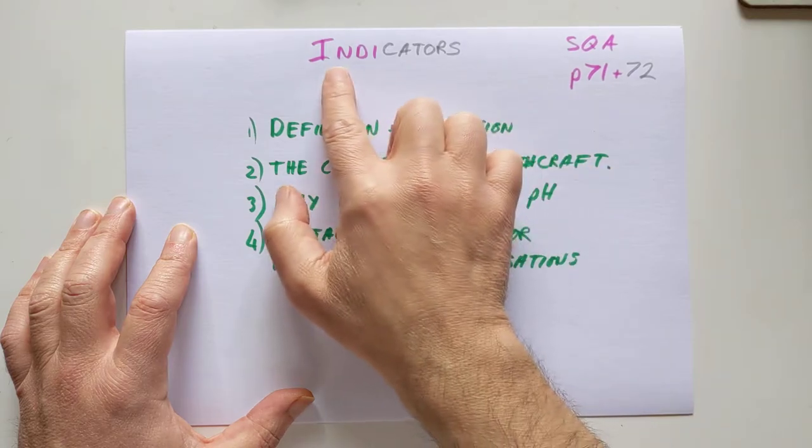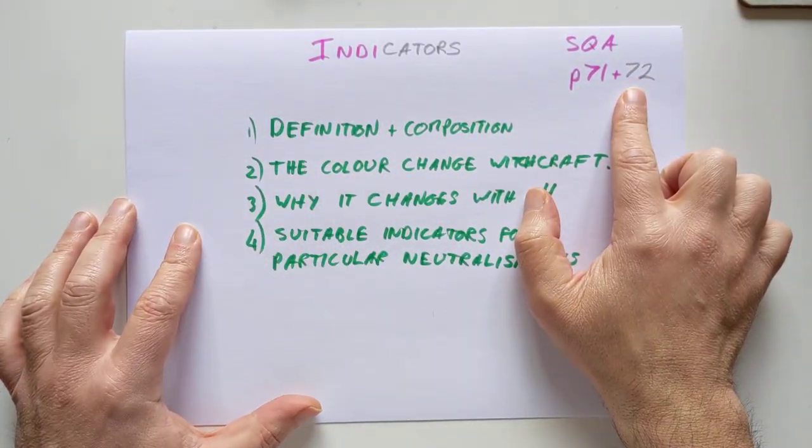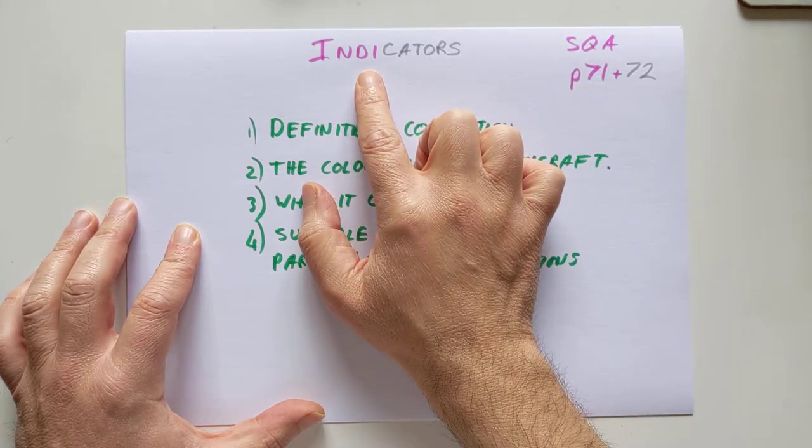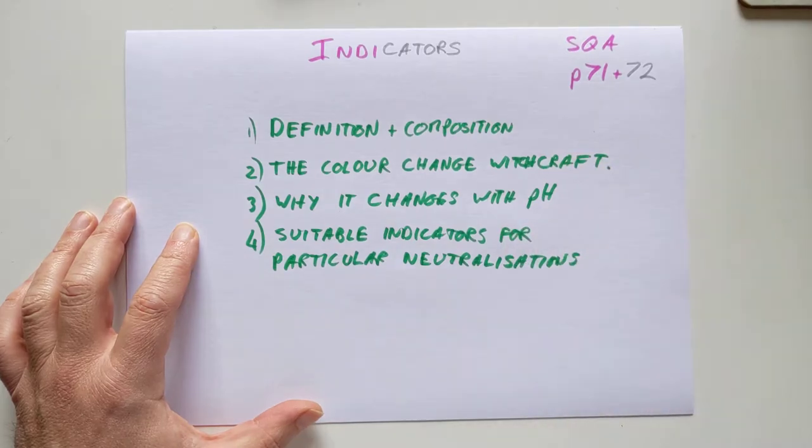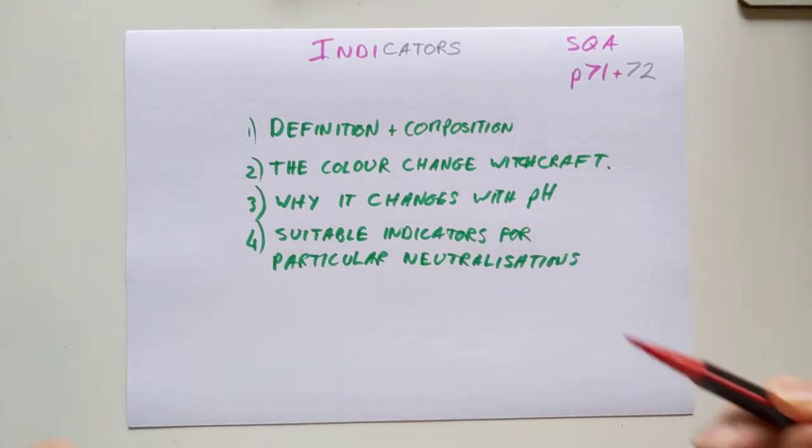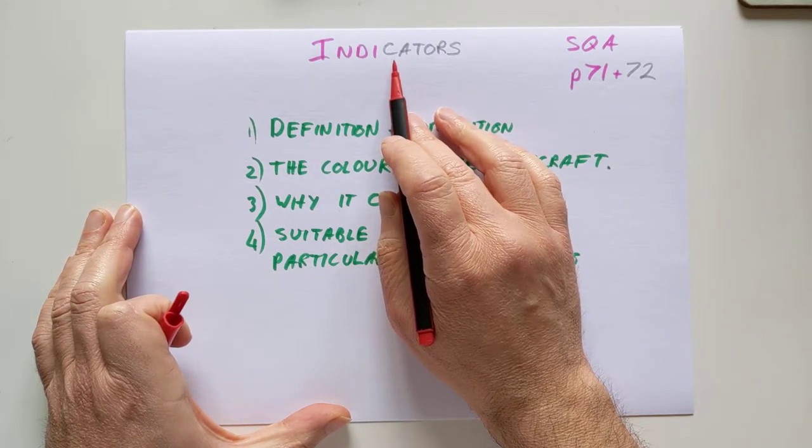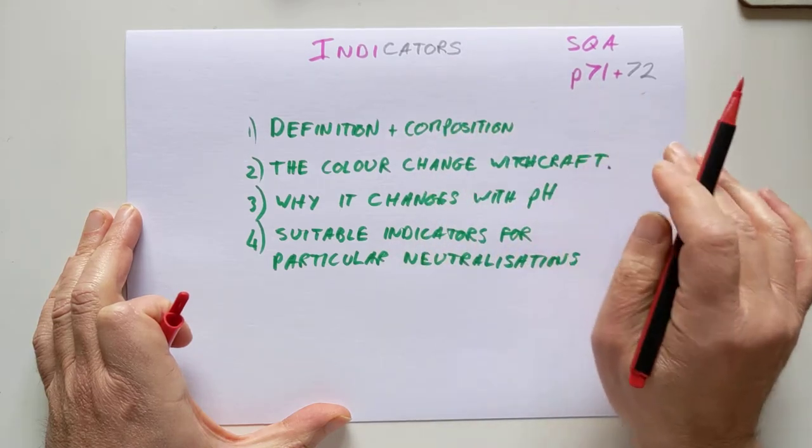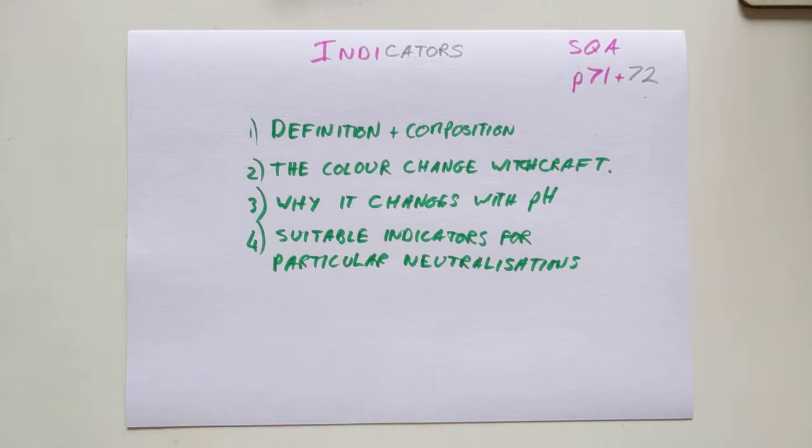Just before I leave, have we spotted the color theme that's going on here? This is an indicator you probably would have first had contact with all the way back at National 5 called phenolphthalein, one of the world's least pronounceable names. It is fuchsia pink in high pH and colorless in low pH. I've been trying to take tips off my wife, the art teacher. Let's move on to the definition and composition.